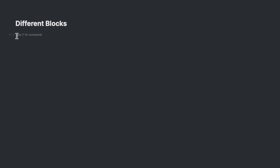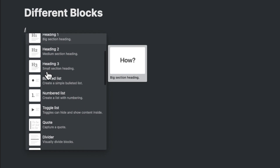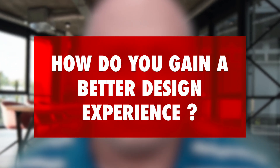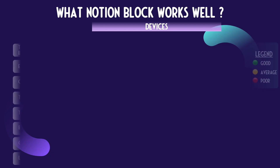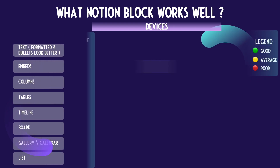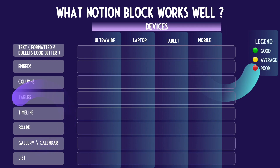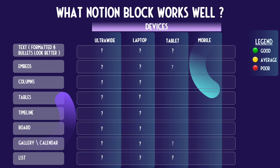While Notion provides you with a range of choices for different types of blocks — like text and different database tables — you would need to adapt some of them to be practical. My aim is to take the guesswork out of designing your next Notion page. The flow of the video will be around how each of the blocks behave across each of the devices to create design decisions for each block. We will be looking at an ultra-wide monitor, the laptop, the tablet, and the mobile.